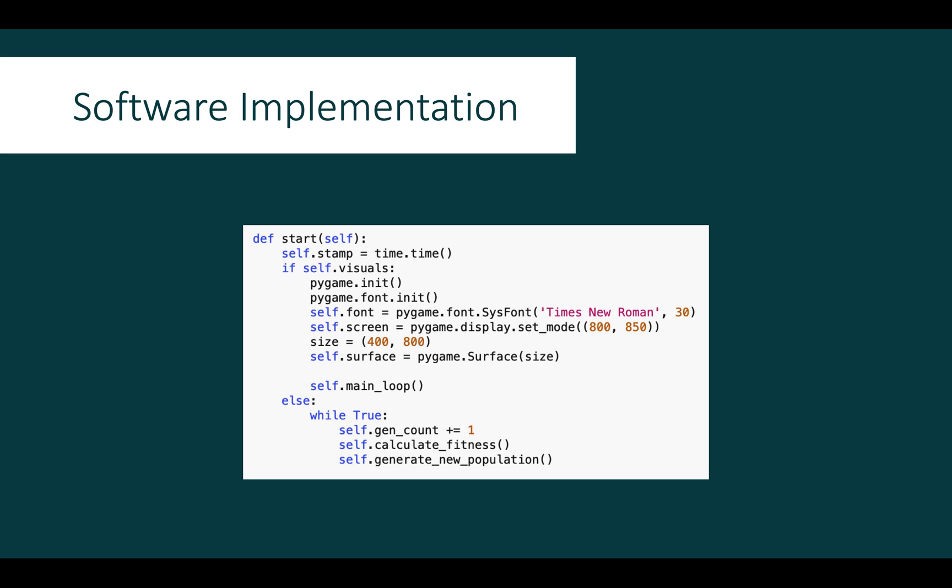After initialisation, start is called on the object where the program will start processing the population either with or without a graphic representation. The core loop of the program involves calculating the fitness of the current population, checking if the shortest path of the current generation is shorter than the all-time best path, and generating the new population.